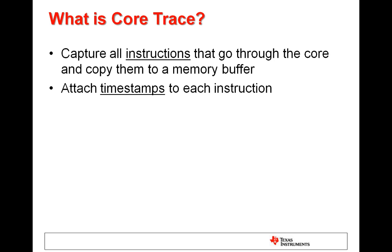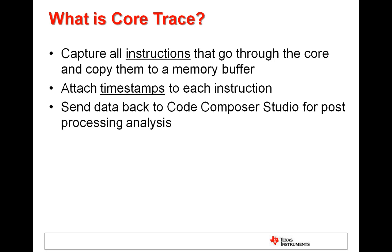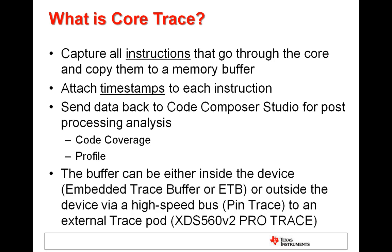These are stored together with timestamps. Once this data is available, CCS can correlate the assembly instructions with the source code, thus allowing looking at the code execution more easily. It can also perform a multitude of other operations. The most relevant are code coverage analysis, which means finding out which routines were actually executed, and profiling, which means knowing how many times and for how long each instruction and routine executed. However, since the execution speed of modern processors can reach billions of instructions per second, it is impossible to gather all this information without special hardware and some buffering between the device and the host PC. That is the reason why core trace is not available in all devices.